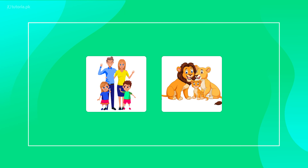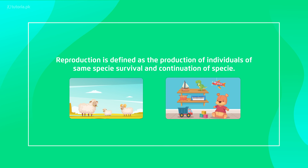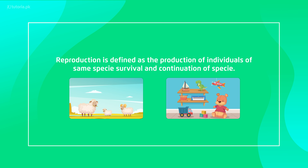If I talk about the definition of reproduction, reproduction is defined as the ability to produce new offspring. When a new offspring is produced which is like its parent, it is called reproduction.